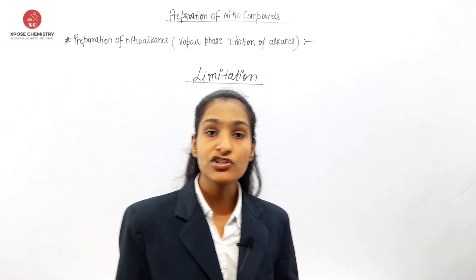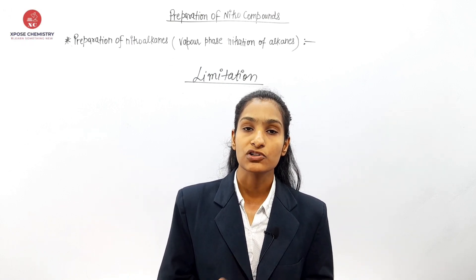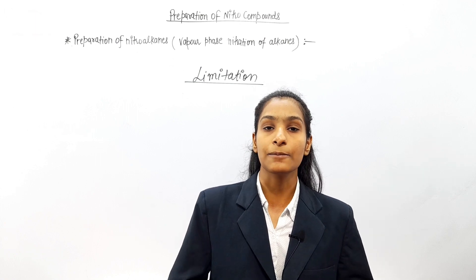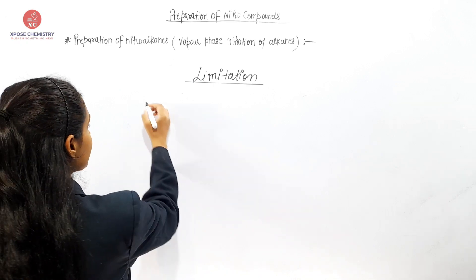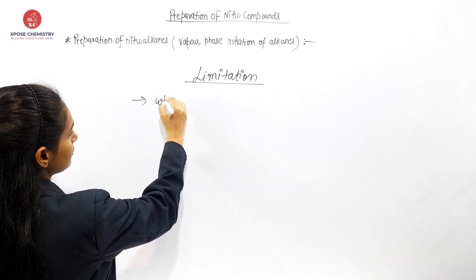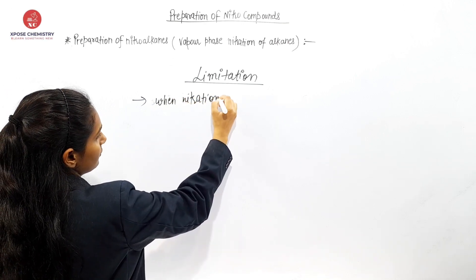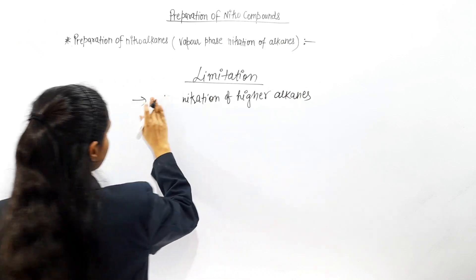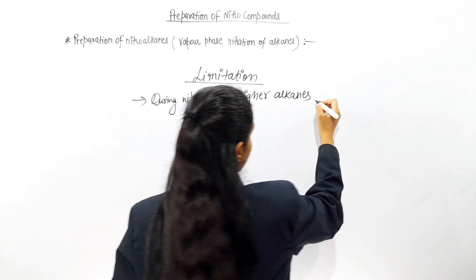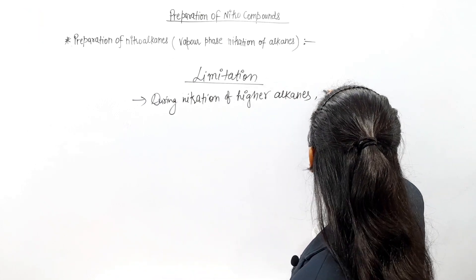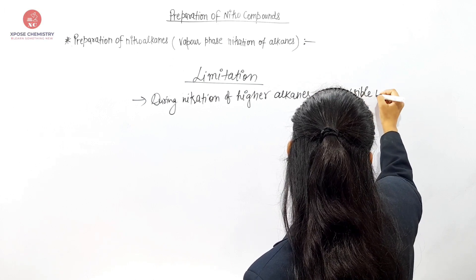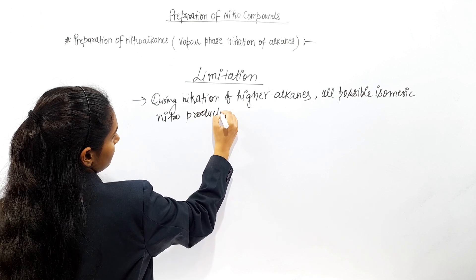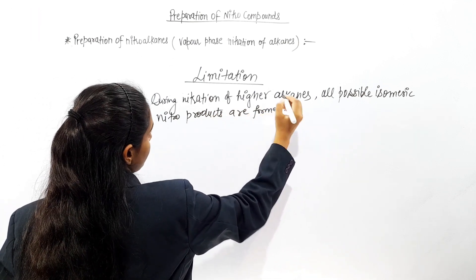When we nitrate higher alkanes, as many isomers as possible — all possible isomeric nitro products — are formed. So the limitation is that during nitration of higher alkanes, all possible isomeric nitro products are formed.